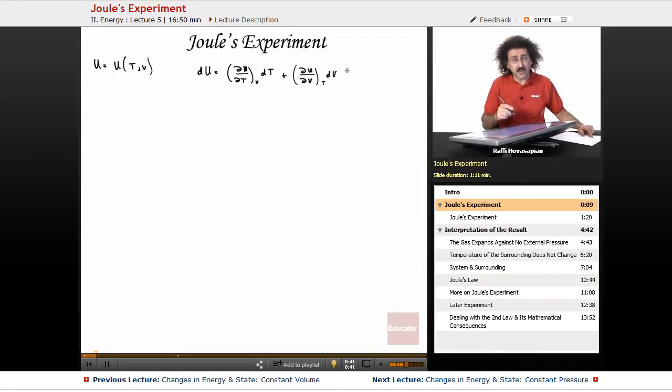In that lesson, we associated this particular thing with the constant volume heat capacity. So now the question is, we took care of this, we associated it with some easily measurable quantity. Now, what can we do about this? That's the question here. We're going to deal with the other partial derivative in this total differential expression.